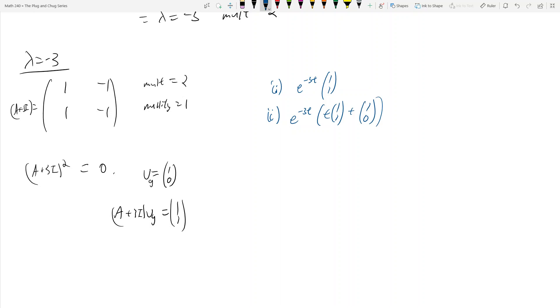And so if we mash these guys up together, we get x(t) is equal to c1*e^(-3t)*(1,1) plus c2*e^(-3t)*(t*(1,1) + (1,0)). Remember this? And now what? Well, now we have our initial value condition, which is x(0).